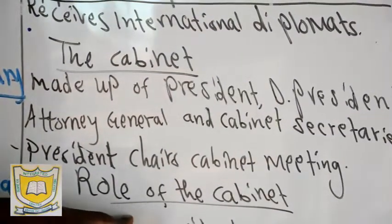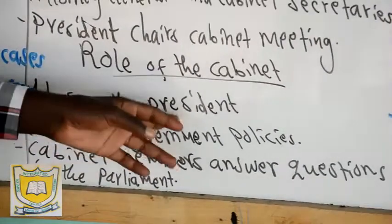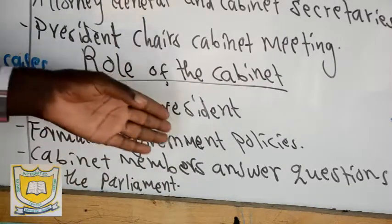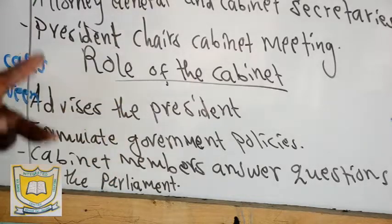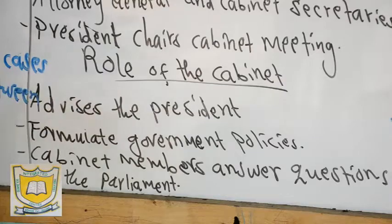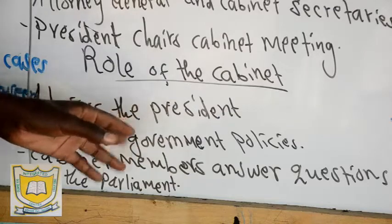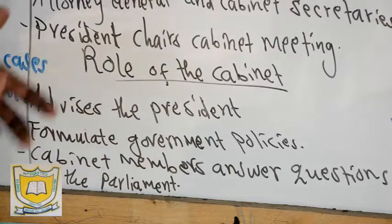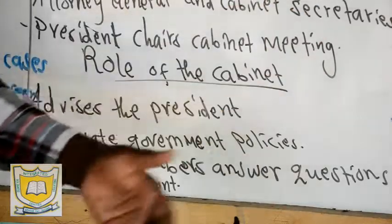Now we look at the function of the cabinet. Number one: the cabinet advises the president on different issues. Like the other day the president called upon people to wait regarding the opening up of transportation because of the issue of Corona. But according to the cabinet meeting held with members like the CS for internal security, CS Matiangi, and CS Mutahi Kagwe for health, they came up with a conclusion. So the cabinet advises the president on different issues — that's what we mean.